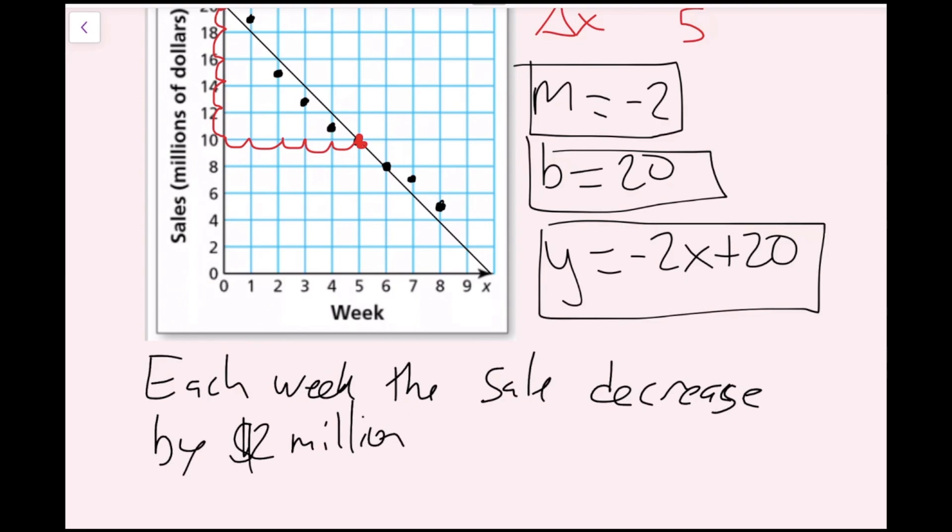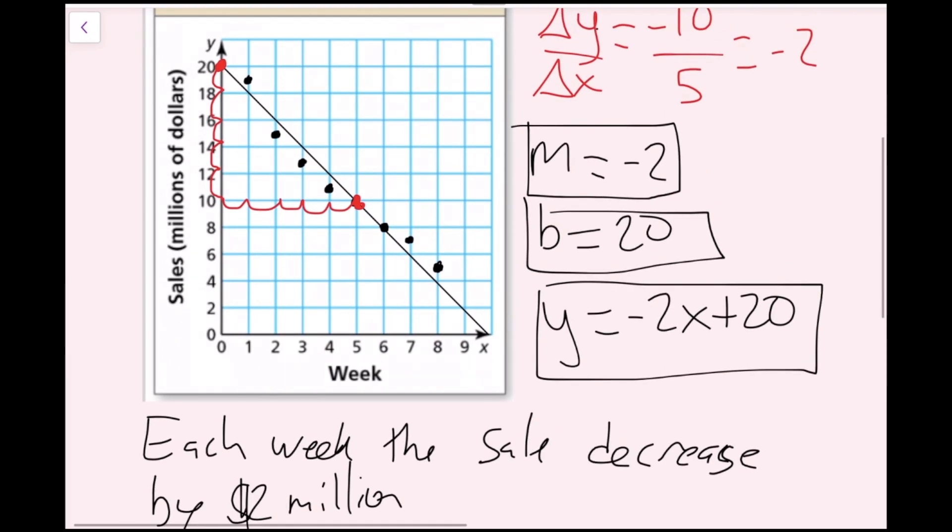Now we have to interpret the y-intercept. If we look back at the graph, the y-intercept means that at week 0 we've sold 20, but that doesn't make any sense here because you can't sell something in week number 0. This actually doesn't make sense. The first week, you sell 19 million and on this line, it's more like 18 million. But in this case, there is no context for the y-intercept.